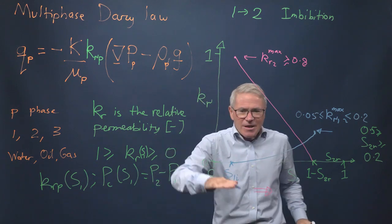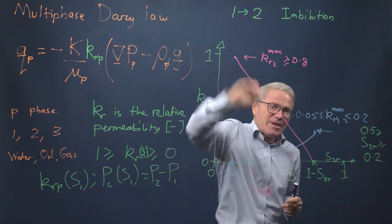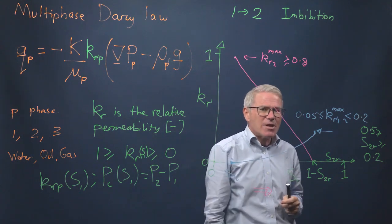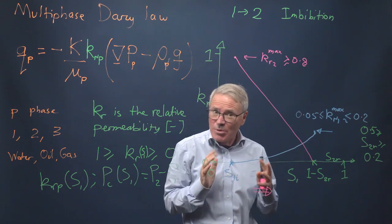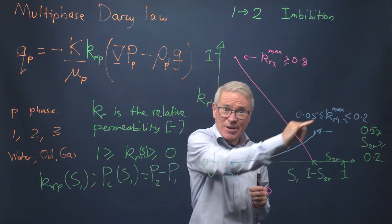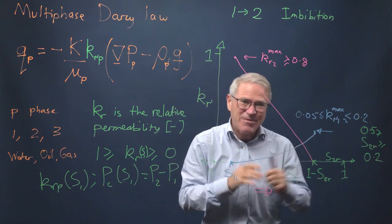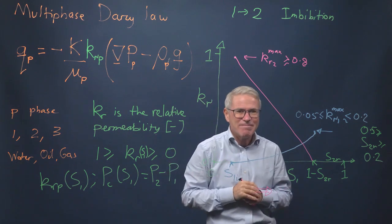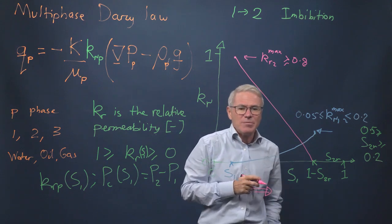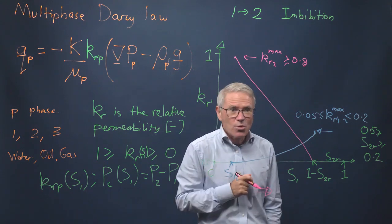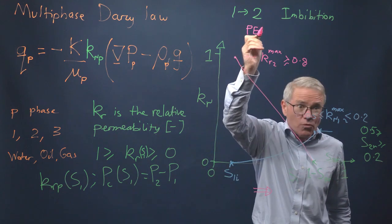The water relative permeability is shown in blue — blue for water — and the non-wetting phase in a different color. The one that starts at zero and goes up is water; the one that starts near one and goes down is the non-wetting phase. This is the imbibition relative permeability for a water-wet rock. The physics of the process is ordinary percolation.